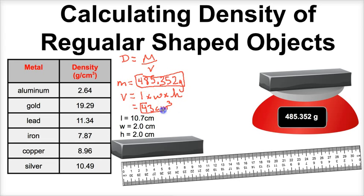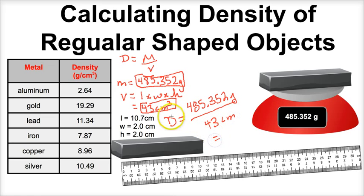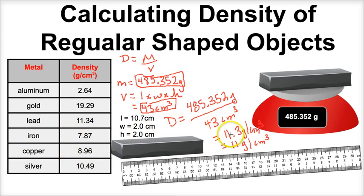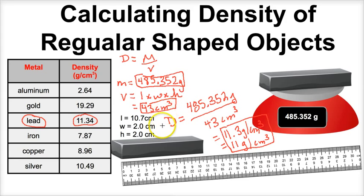We now know the mass and the volume, so to figure out the density of this unknown metal we take the mass, 485.352 grams, and divide by 43 cubic centimeters. We end up with 11.3 grams per cubic centimeter, or using the correct number of sig figs, 11 grams per cubic centimeter. Comparing this to our table, the density of lead is about 11.3 grams per cubic centimeter — so that's how we determine the density of regular shaped objects like cubes, spheres, and rectangular boxes.